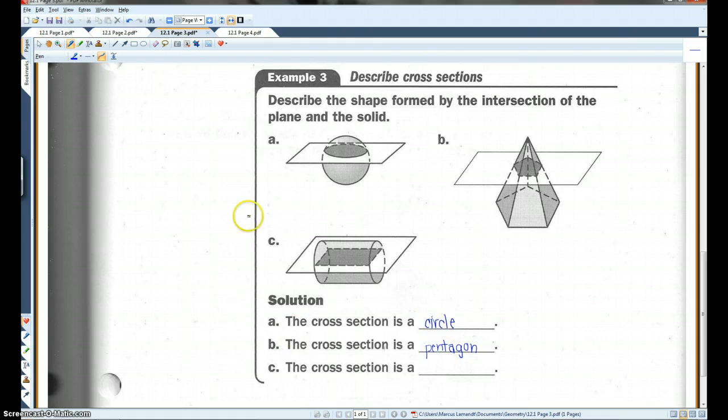For the third one, we have a cylinder intersected by a plane. If the plane had been going up and down, it would have been a circle. But because it goes from side to side, we have a rectangle.